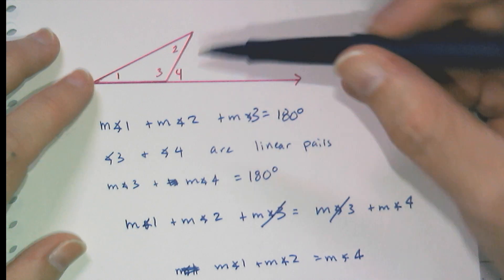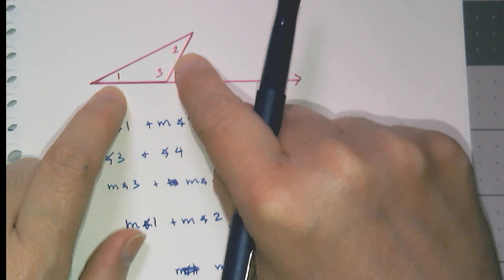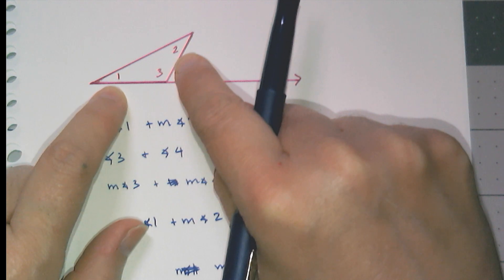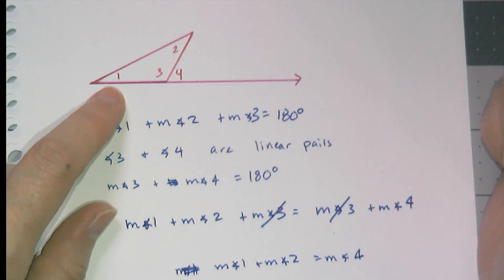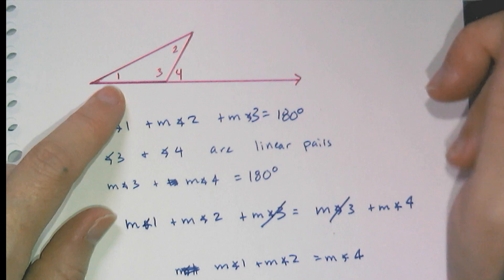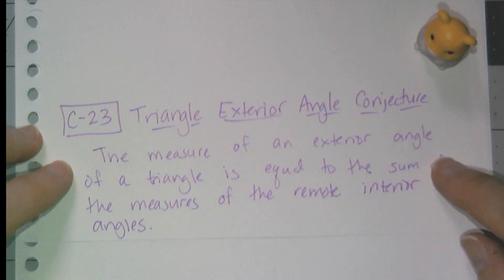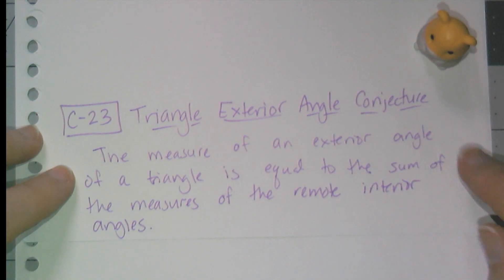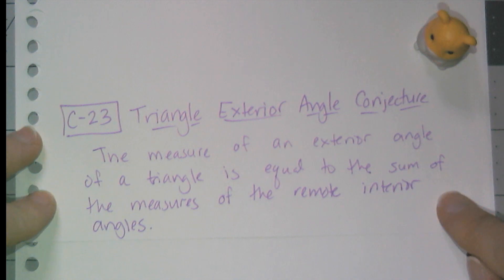So the measure of this exterior angle is equal to the sum of the remote interior angles. That's conjecture 23: the measure of an exterior angle of a triangle is equal to the sum of the measures of the remote interior angles.